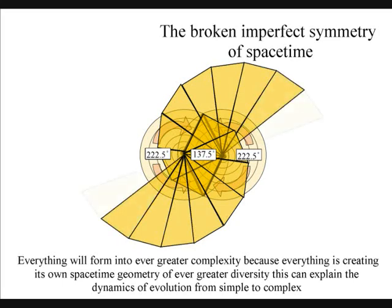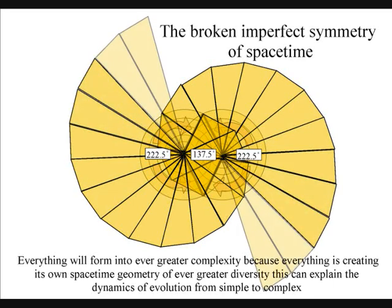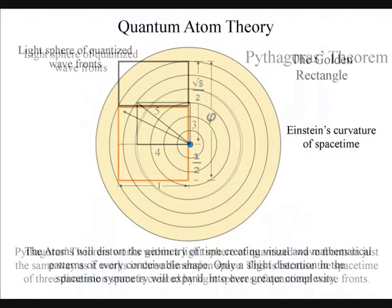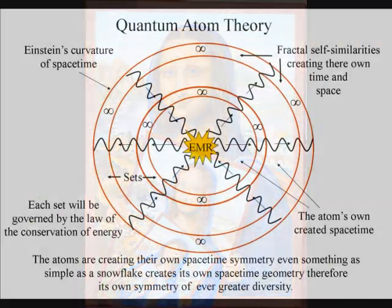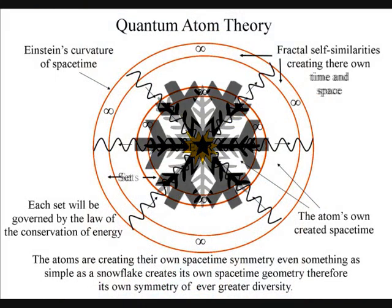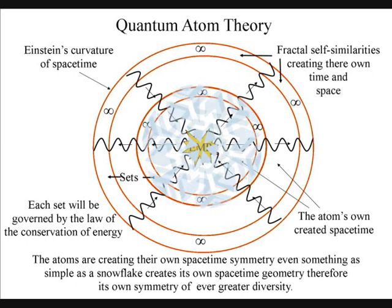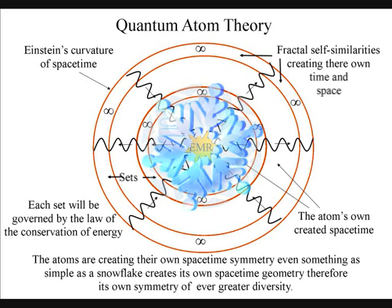Everything will form into ever-greater complexity, because everything is creating its own space-time geometry of ever-greater diversity. This can explain the dynamics of evolution from simple to complex. Even in something as simple as a snowflake, we have total diversity. There is no two patterns of snowflakes the same. This is because the atoms of each snowflake are creating their own space-time geometry, therefore their own symmetry.